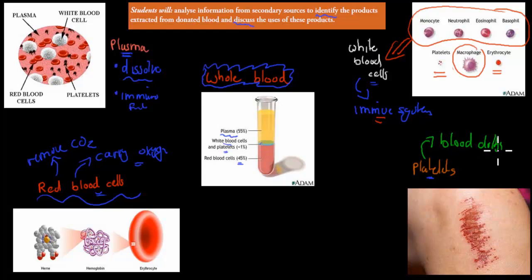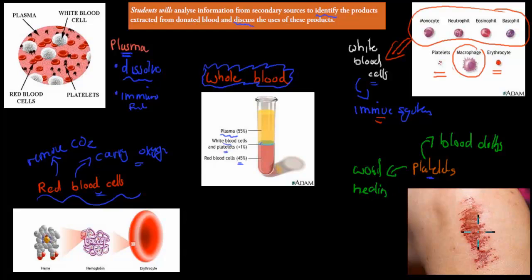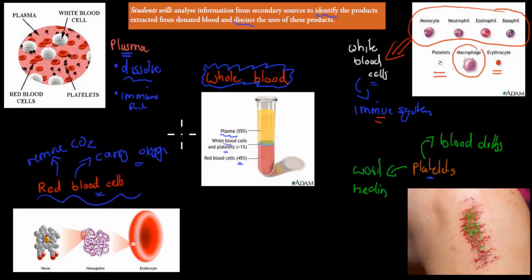One of the major things we need platelets for is wound healing. This here might be a scab, but this forms because platelets make sure this happens. So these were some of the components and what they are used for in the body, but we haven't discussed the uses yet — this was just a general introduction. I'll go over the actual products and their uses.